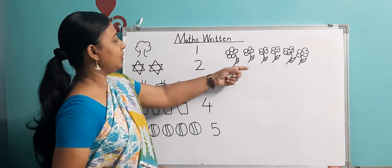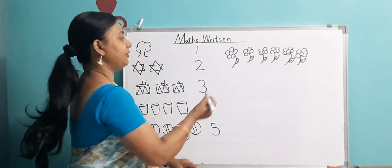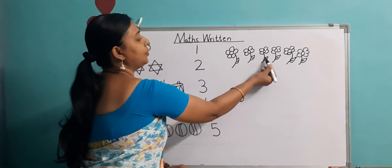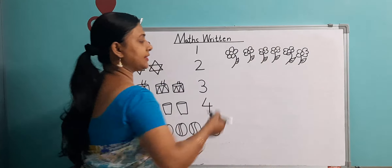One, two, three, four, five, and six. Once again, we will count: one, two, three, four, five, and six.